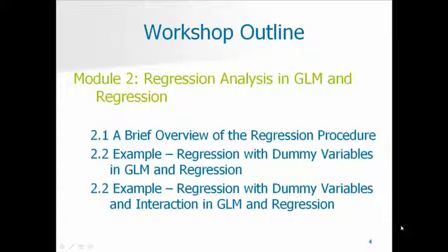Then we will run through a few regression examples. First, we will run a regression with some categorical dummy variables, so you can see how those work. We will run that in both the GLM and regression to see how they differ and how they're the same. Then we're going to add an interaction term to the model, and that's when you start to see where some of the real advantages of GLM come in.